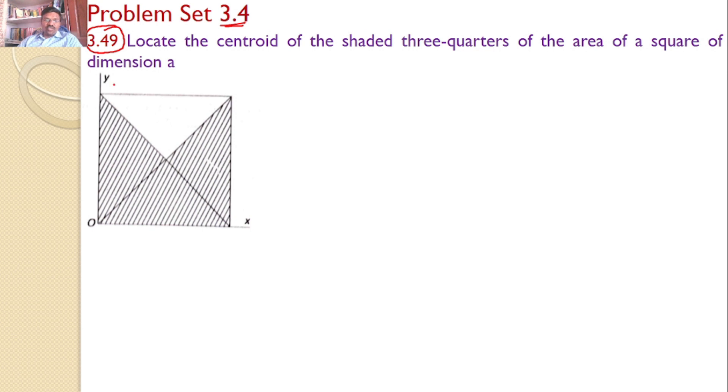The total area is a square of size a, but this type of shape has been removed. Our interest is to find the centroid for the remaining shaded area. So what I will do is, I will divide this into area 1, that is the total square,